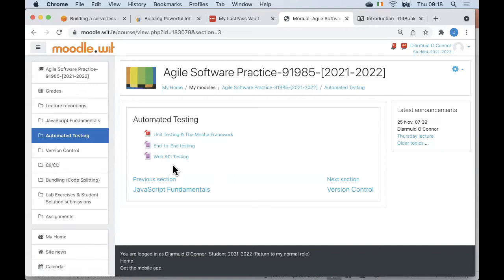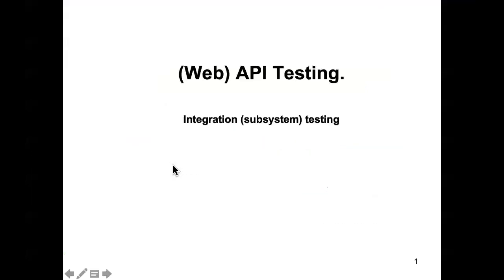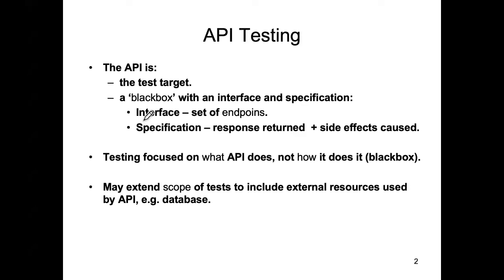A lot of the issues we are already familiar with from both unit testing and end-to-end testing. Perhaps the older name for web API testing might be integration or subsystem testing, but the more modern term would be API testing. When you're talking about API testing, we know this notion of having a test target. Clearly, the target of our tests in this case is the API — or more specifically, the various endpoints that make up your API.